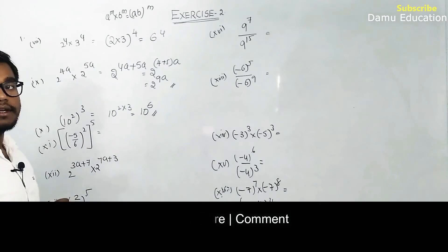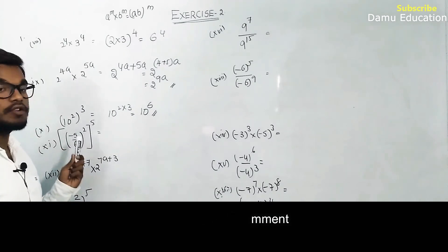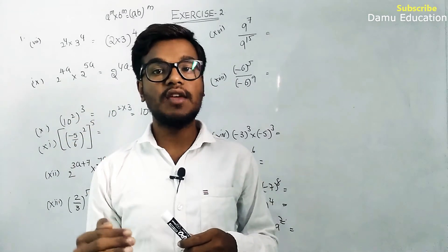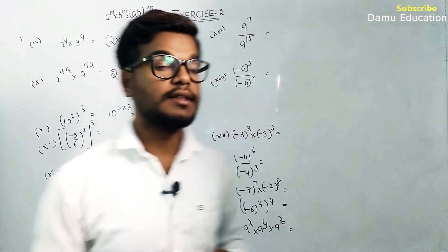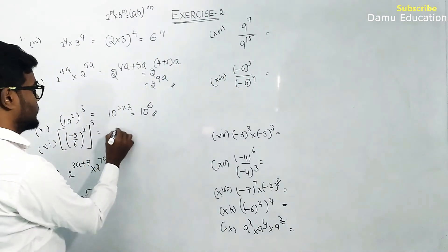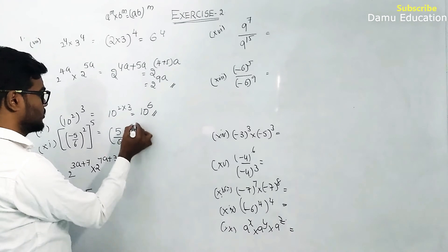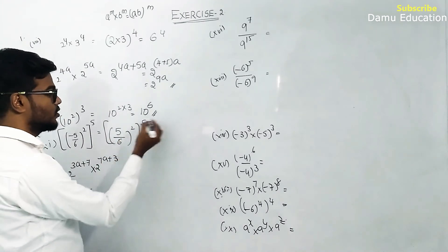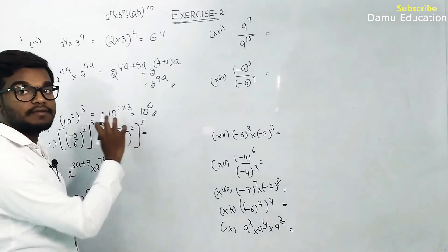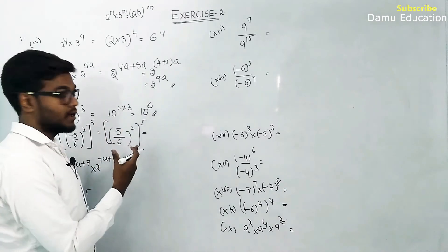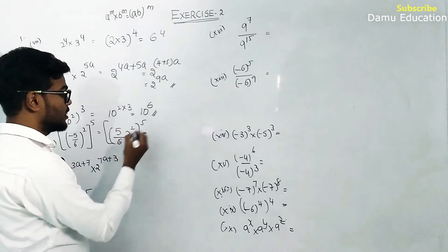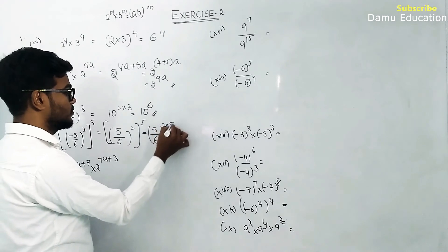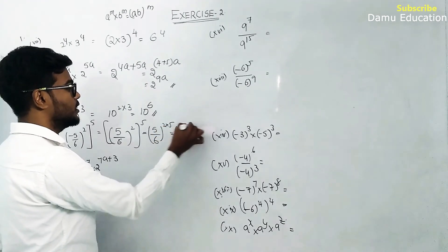Next: minus 5 by 6 whole square, whole to the power 5. Since the outer power is even, minus becomes plus, giving 5 by 6 whole square. Then using a power m whole power n: 5 by 6 whole power 2 into 5, which equals 5 by 6 whole power 10.